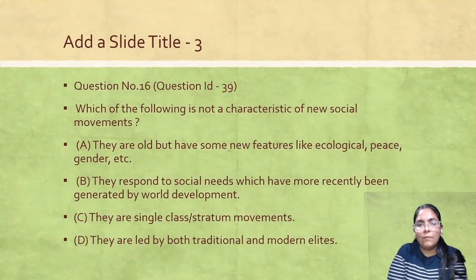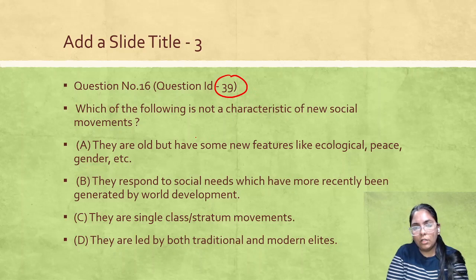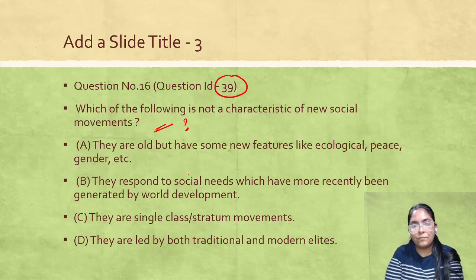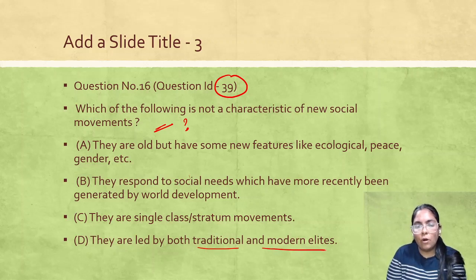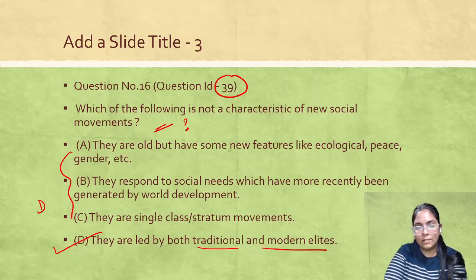Question ID 39: Which of the following is NOT a characteristic of new social movements? The answer is that both traditional and modern elites are not part of new social movements — this is the answer. All other points listed are characteristics of new social movements.